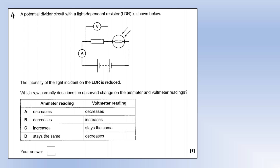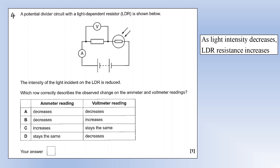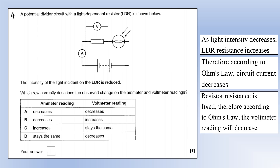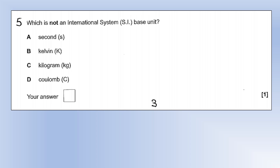Question 4: light intensity on the LDR is reduced in a potential divider circuit. As light intensity decreases, LDR resistance increases, so current decreases everywhere in the circuit — the ammeter reading decreases, narrowing it to A or B. The fixed resistor's resistance is unchanged, so by Ohm's law, smaller current with constant resistance means the voltmeter reading also decreases — answer is option A.